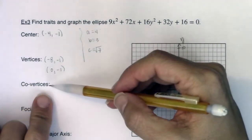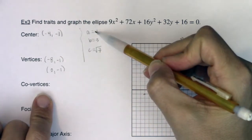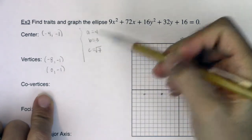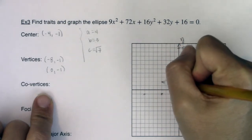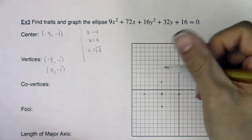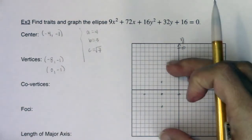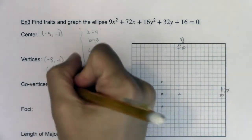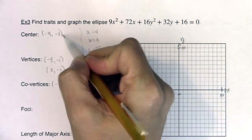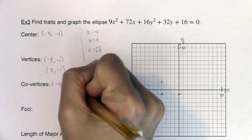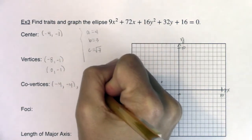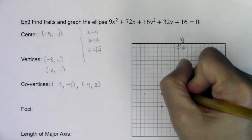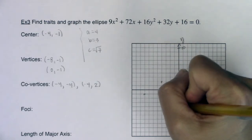The co-vertices use b — we go b units from the center, and since b was associated with the y variable, that moves us up and down 3 units. Up and down motion affects the y coordinate, so the x coordinate stays at negative 4. Negative 1 minus 3 is negative 4, giving co-vertex at (negative 4, negative 4). And negative 1 plus 3 is 2, giving co-vertex at (negative 4, 2). That checks out on the graph.